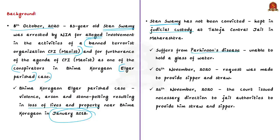Stan Swamy suffers from Parkinson's disease and is therefore unable to hold a glass of water. Thus, on 6th November 2020, a request was made to provide him a sipper and straw to drink water. For such a facility at judicial custody, the accused had to move to the mercy of the court. The court scheduled the hearing after 20 days, and recently on 26th November, the court issued necessary directions to the jail authorities to provide him a straw and sipper.